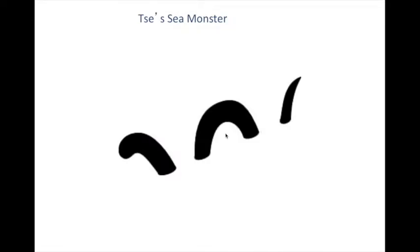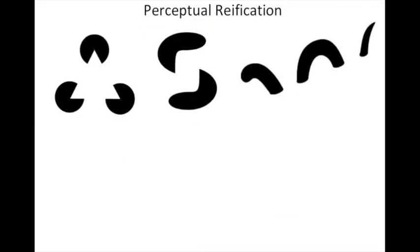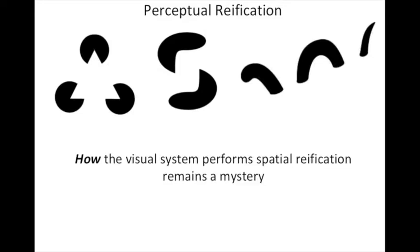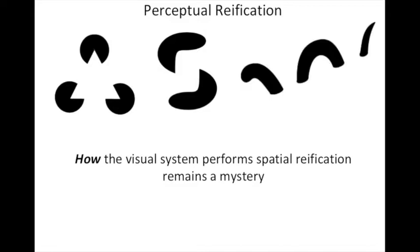Here's Peter Tse's sea monster, which is also perceived as a three-dimensional structure. Perceptual reification is the most extraordinary visual function. How the visual system performs this spatial reification remains a deep, dark mystery—but that it does so is an observational fact.